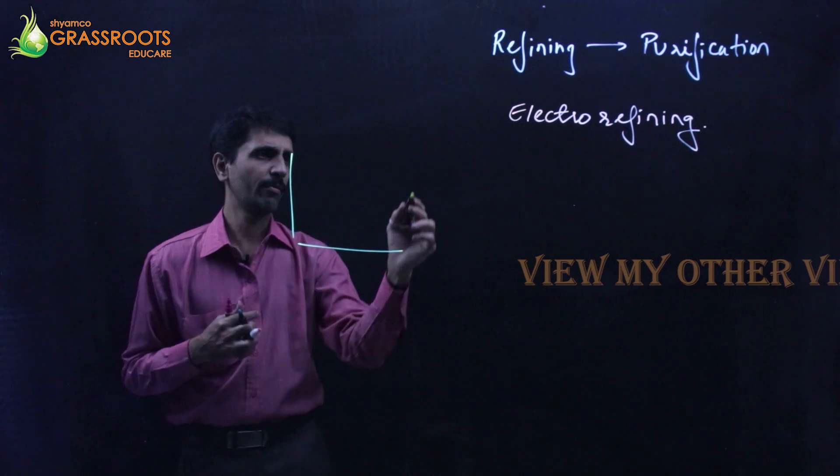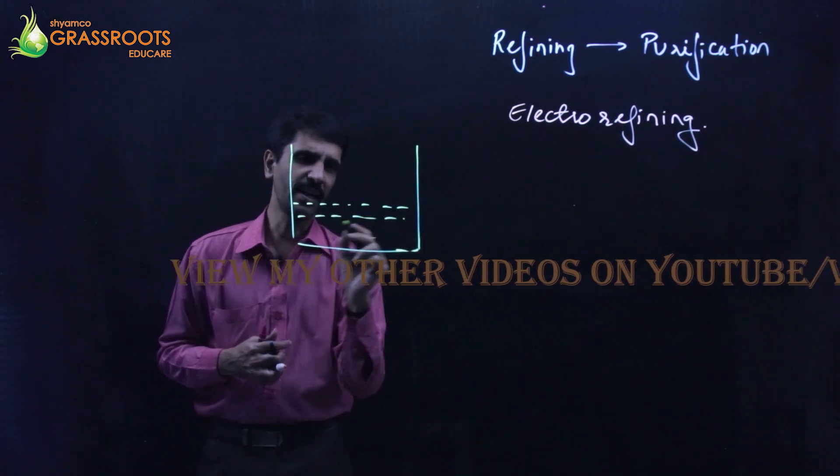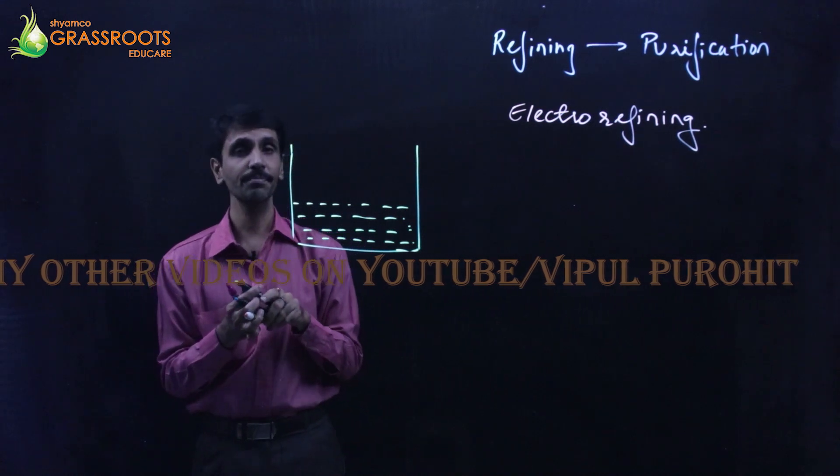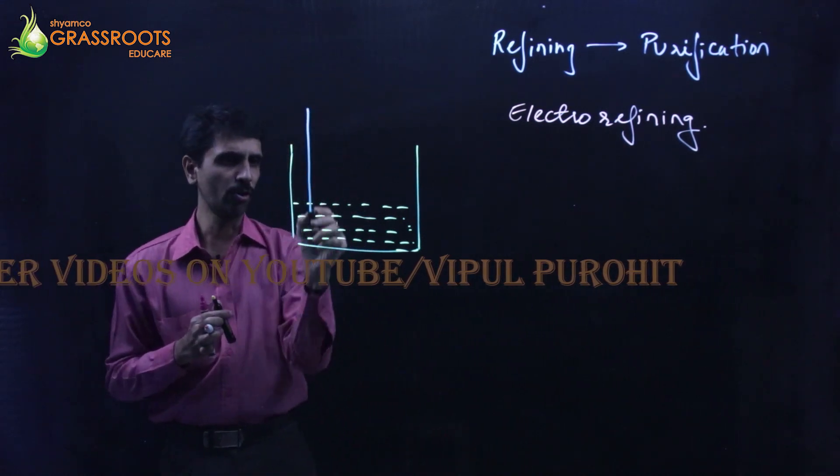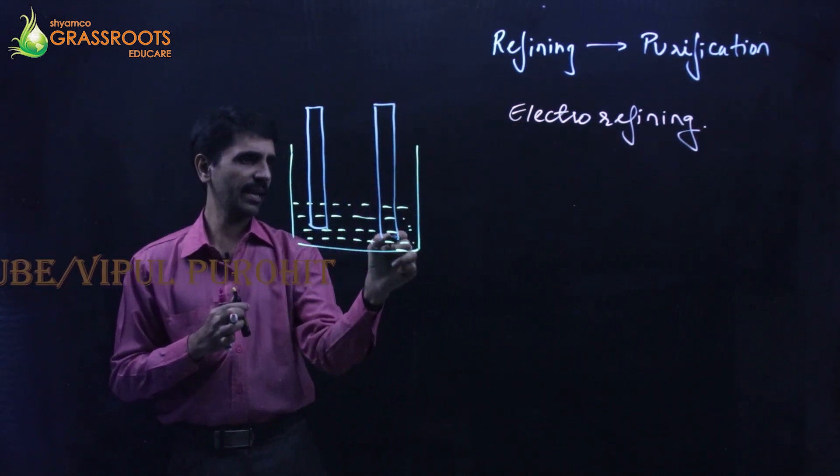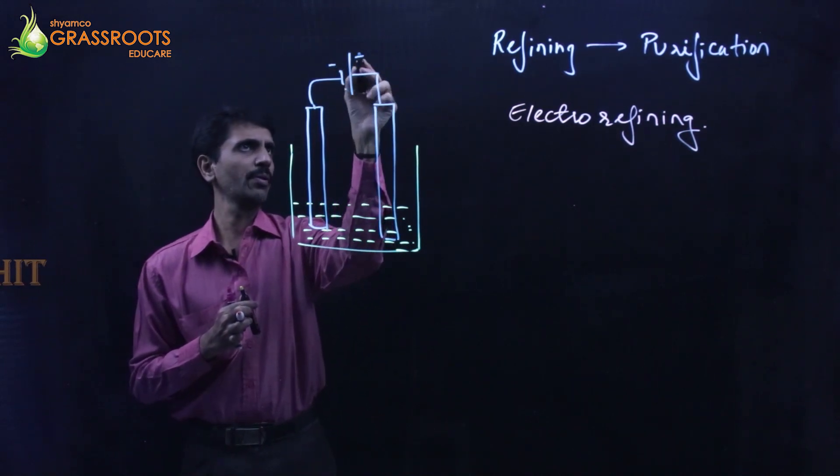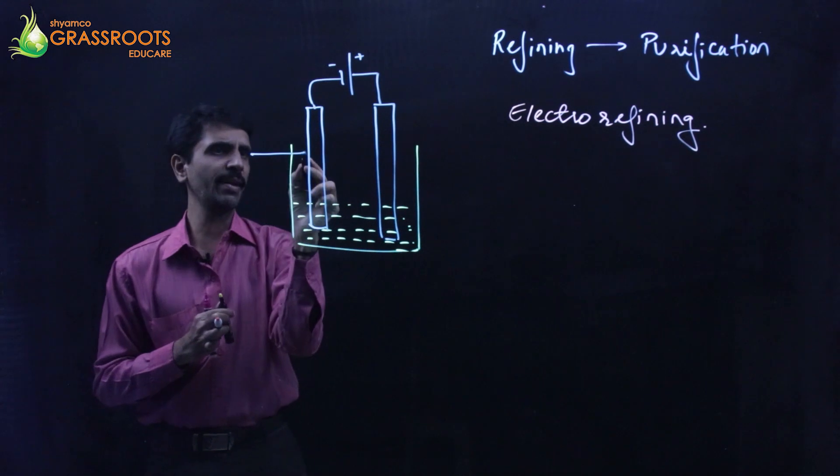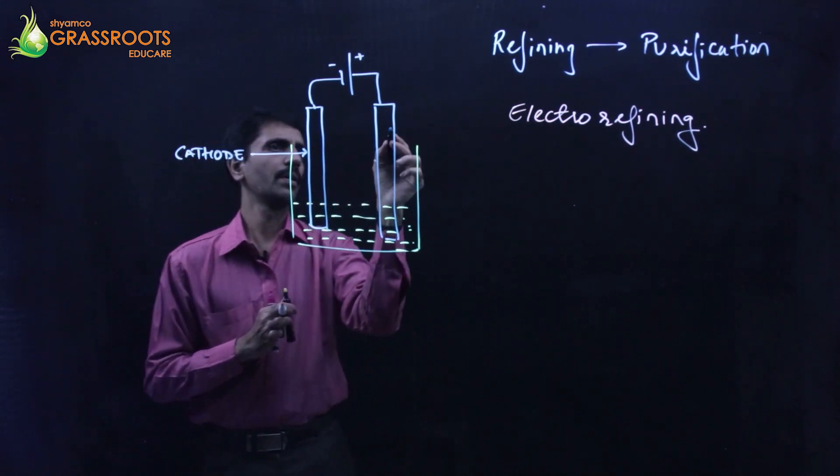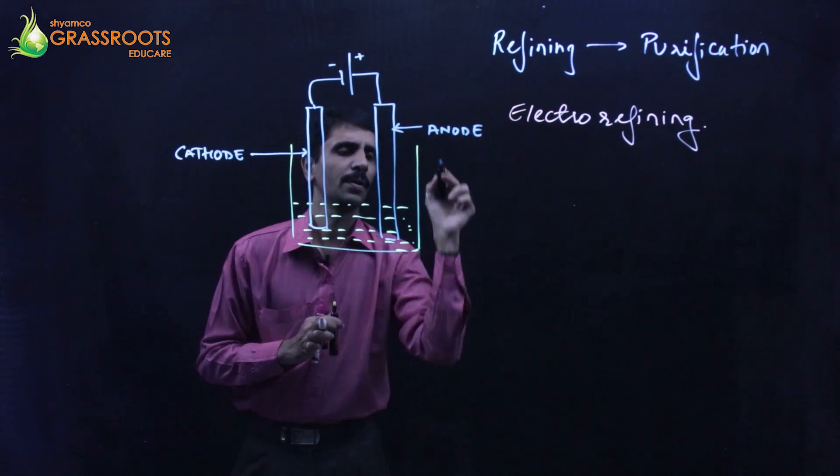The setup is like we have an electrolytic tank. We are going to fill this up with an electrolyte, which is nothing but the salt of the metal which is to be deposited. We have two electrodes like this. We connect it to the source of current this way - negative and positive. The negative electrode we call cathode, the positive one we call anode.